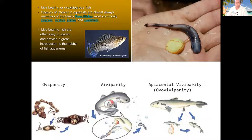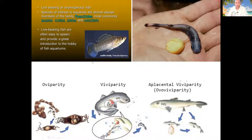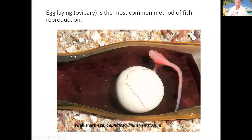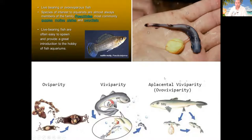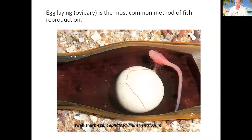Different fish have different adaptations for these reproductive strategies. You might have seen fish like mollies and guppies — we call them live bearers because they produce babies instead of eggs. Most fish produce eggs. Even sharks: they produce larvae, not eggs — they are internally fertilized and what comes out is the young ones, not eggs.